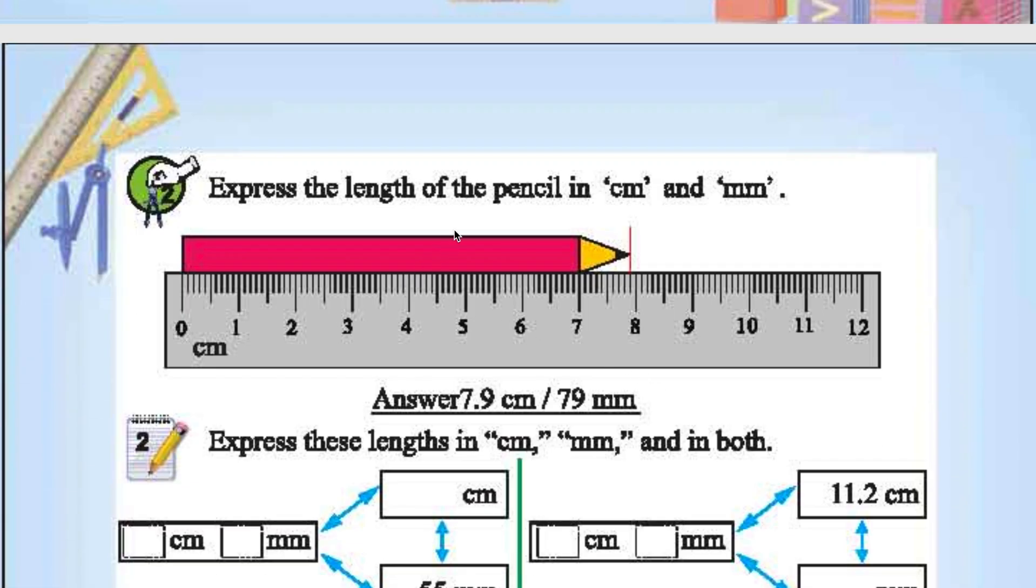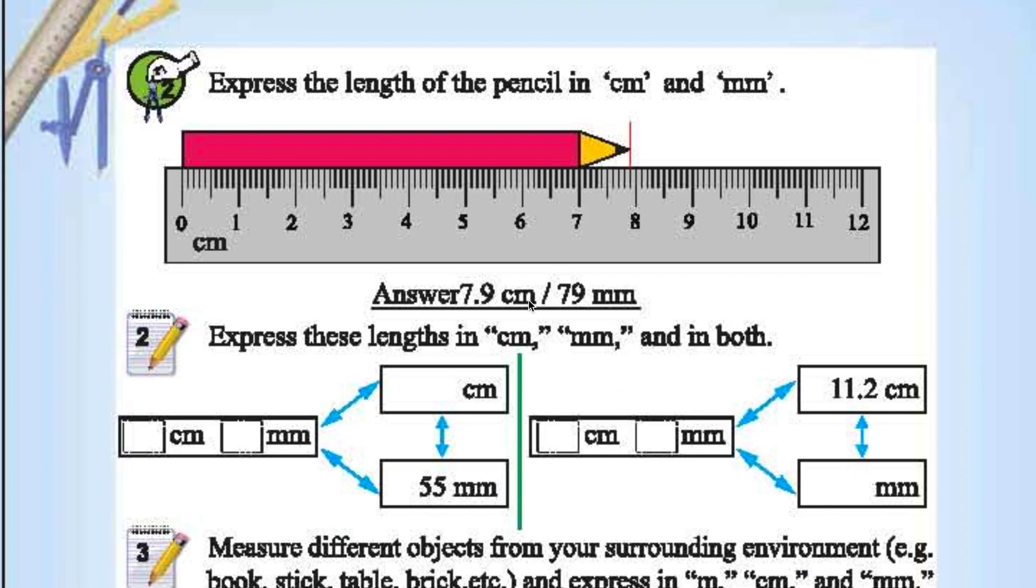Express the length of pencil in centimeters and millimeters. In centimeters it is 7.9 centimeters. Why? 1 centimeter is 10 millimeters.